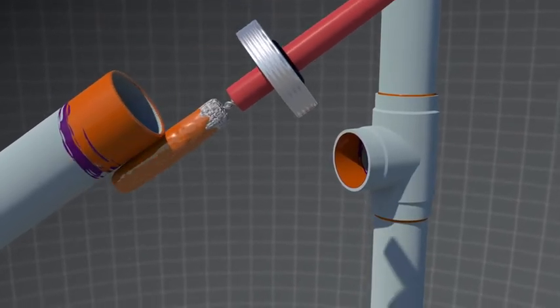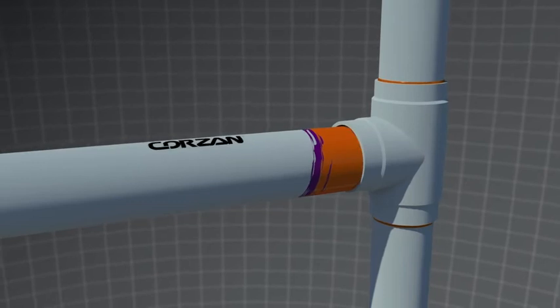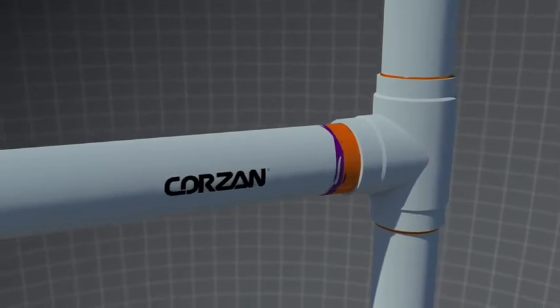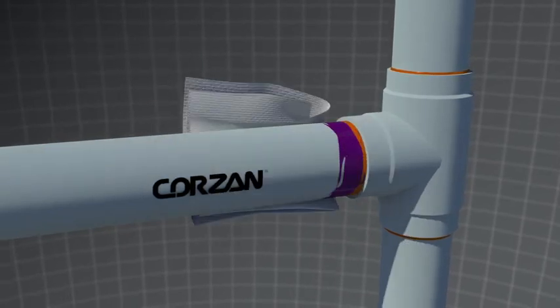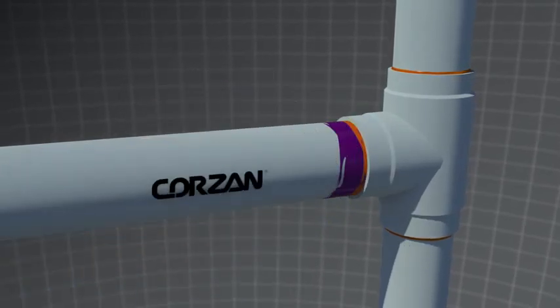Insert the pipe into the fitting while turning a quarter turn or approximately 90 degrees when possible. Hold for 30 seconds to allow the joint to take. Finally, wipe excess cement from the outside of the pipe.